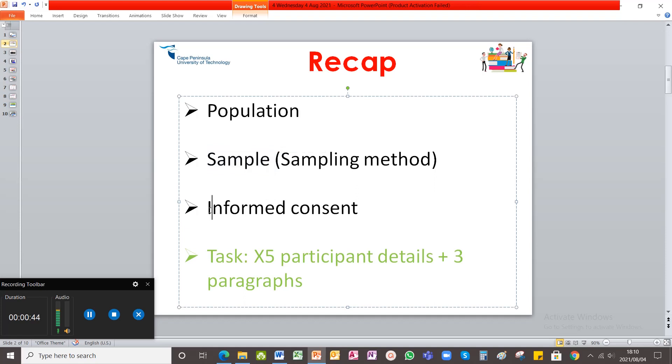Now, in order for protection of personal information and identity, you have to create an informed consent document that will help the participants of the sample understand who you are, why you're doing your research, and that their identity will remain confidential. And your task for last week was to identify five participants, which is your class peers, and record their details.